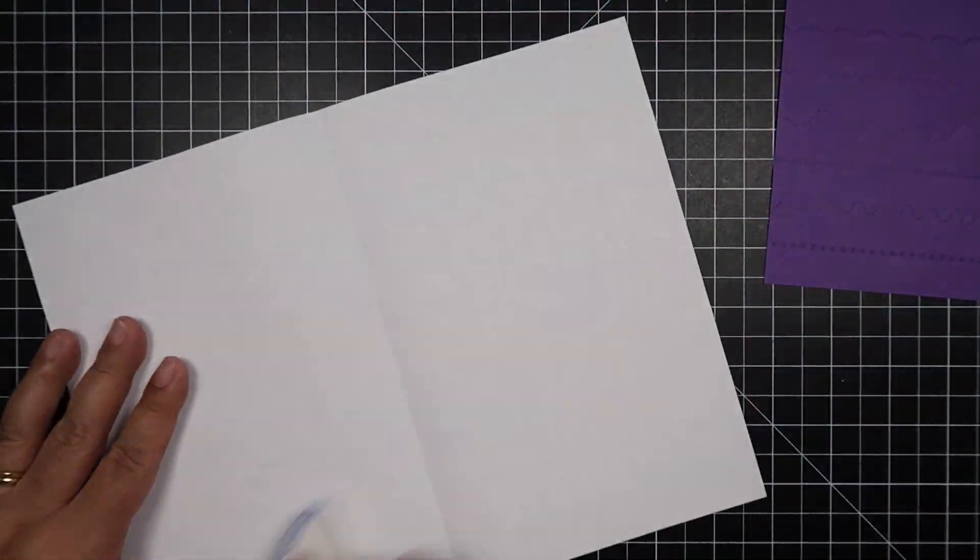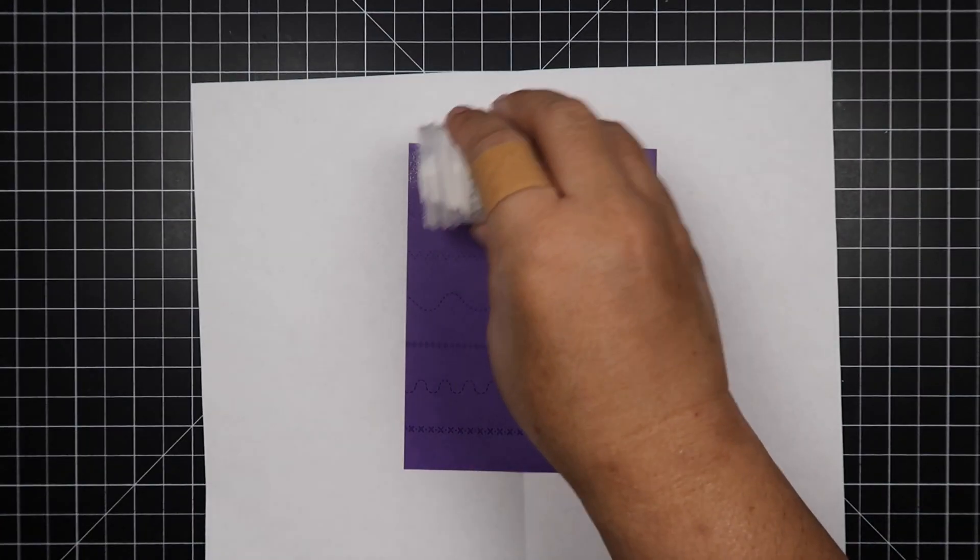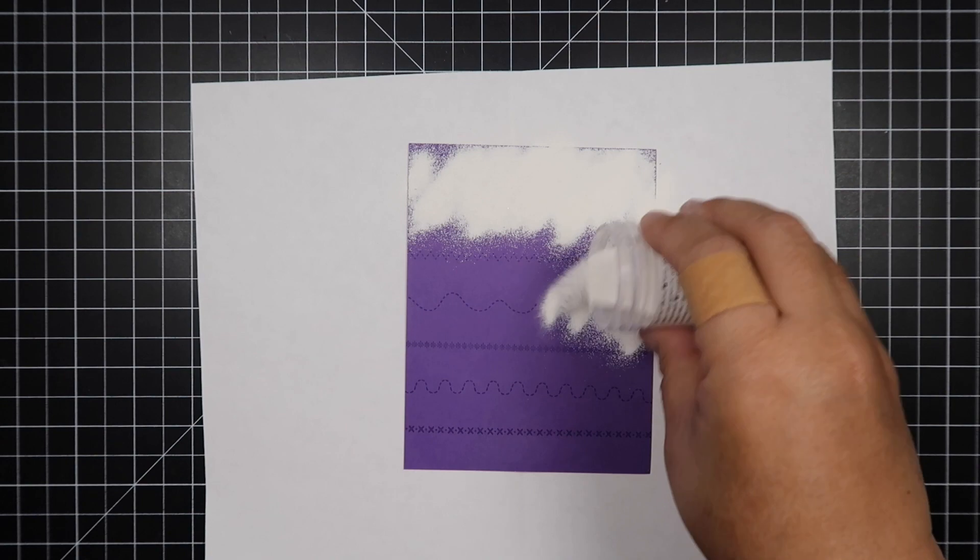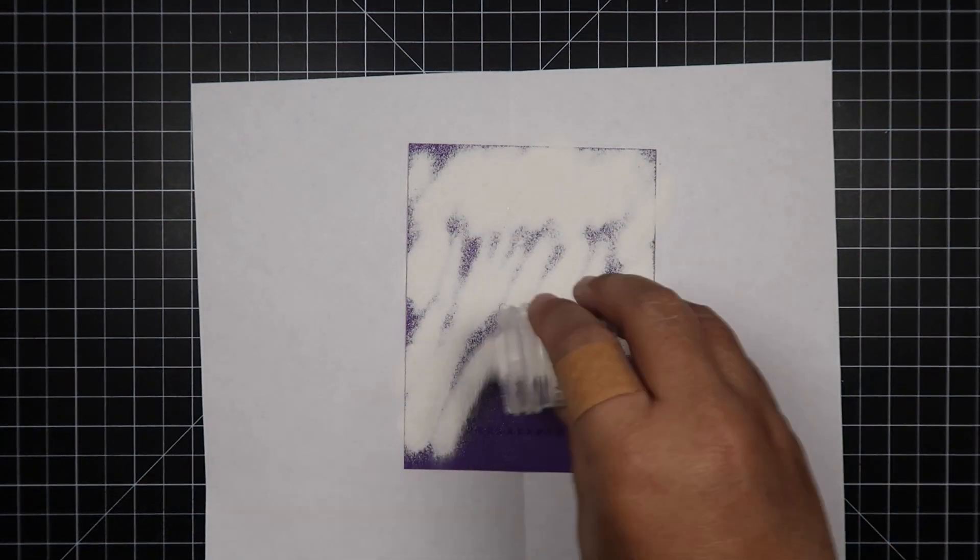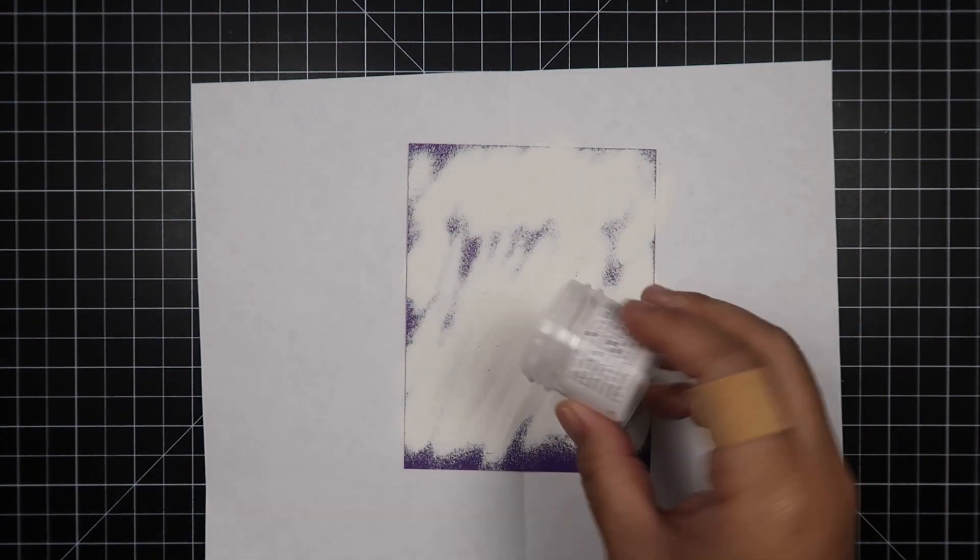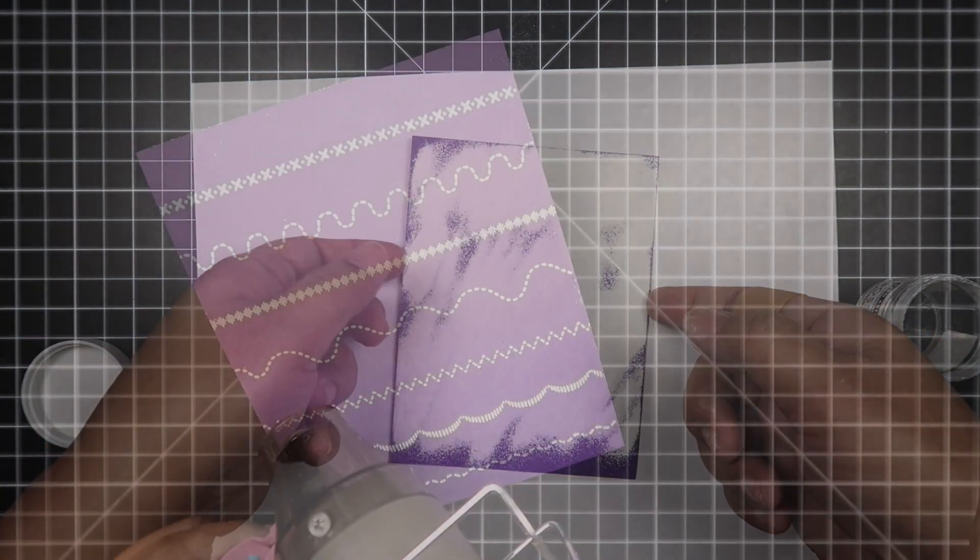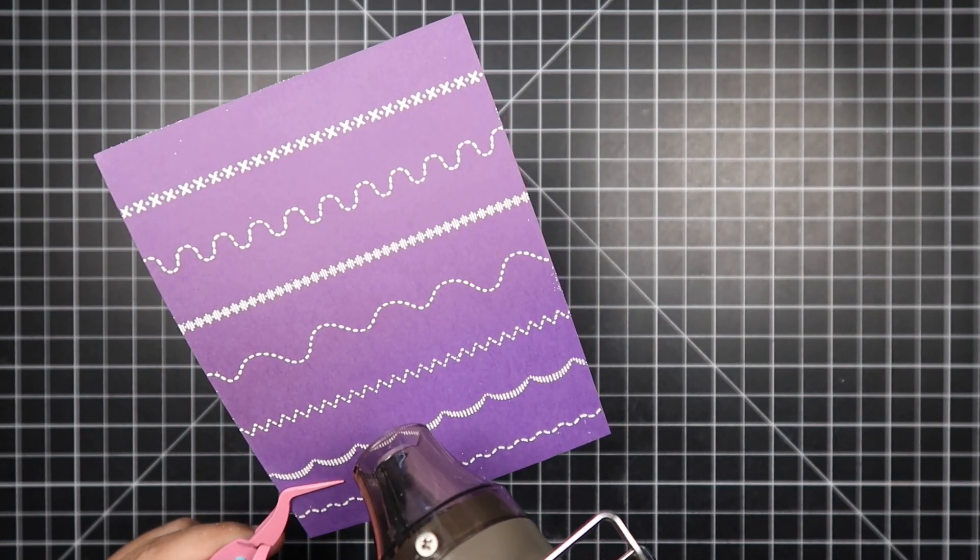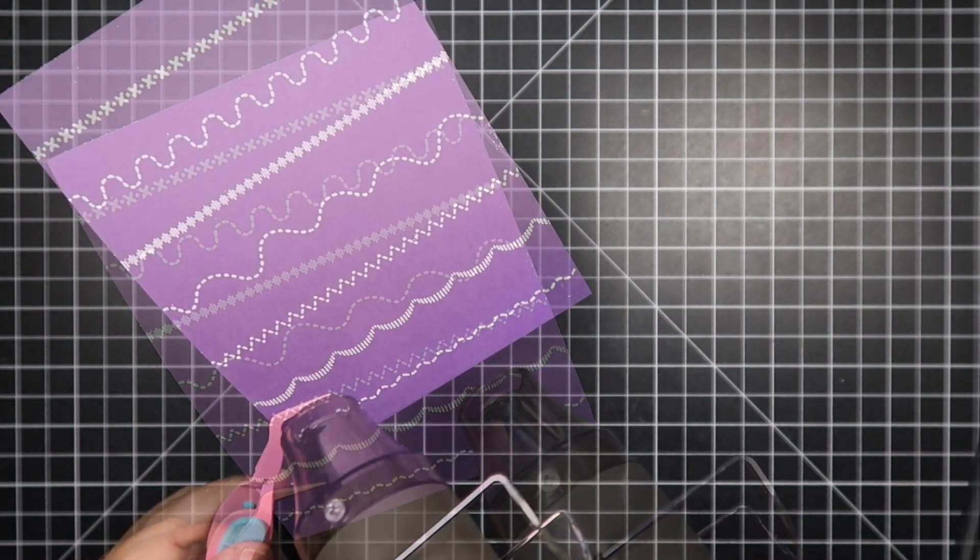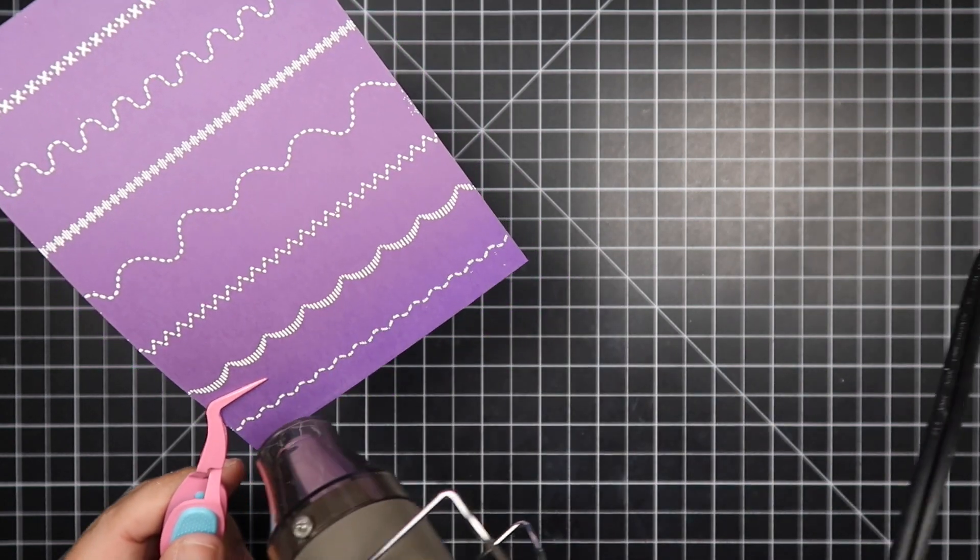Let's get into stamping. I chose seven patterns from the border stamp set and we're going to heat emboss this with white embossing powder. I also chose a purple cardstock because this year's color is purple, so I wanted to tie that into my slimline card.